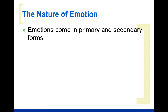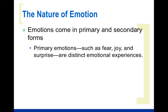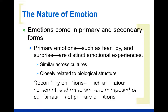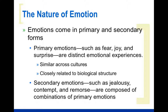There are also primary and secondary emotions. Primary emotions are distinct emotional experiences — fear, joy, surprise. We know exactly what they are and what they feel like. These are similar across cultures and closely related to biological structure. Secondary emotions like jealousy, contempt, and remorse are basically composed of combinations of primary emotions. Jealousy, for example, is kind of a combination of fear and maybe a little sadness. Be able to recognize what are considered primary emotions and what are secondary emotions.